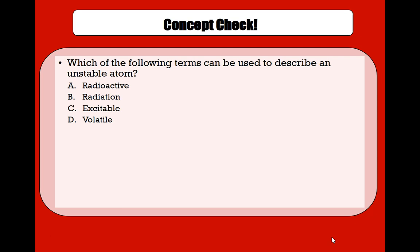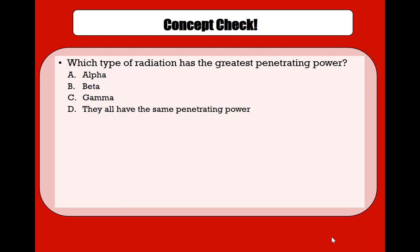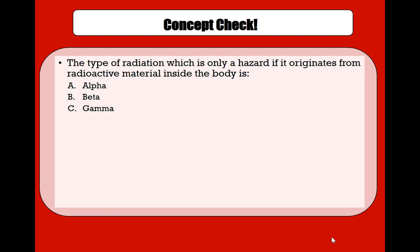Let's do some quick concept checks. Which of the following terms can be used to describe an unstable atom? Answer: A — Radioactive. Which type of radiation has the greatest penetrating power? Answer: C — Gamma. The type of radiation which is only a hazard if it originates from radioactive material inside the body is: Alpha.